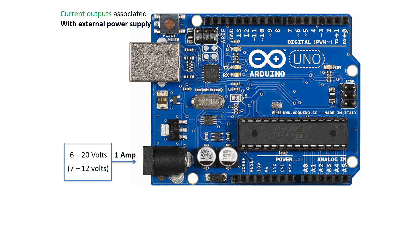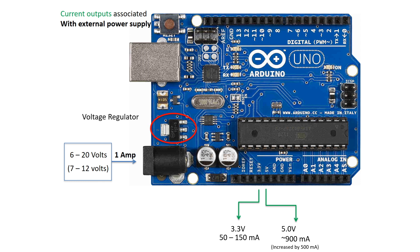With respect to the barrel jack input, we can provide up to 1 amp of current to the board. In this case, the capability of our 5 volt pin increases from 400 to 900 milliamps, whereas the 3.3 volt pin still can only supply a maximum of 150 milliamps. It's okay to provide a higher voltage through the barrel jack because of the onboard voltage regulator. However, providing more than 7 volts will cause the regulator to work harder and get hot, producing thermal limiting, which causes the maximum available current through the 5 volt pin to drop. That 900 milliamps is specific to a 7 volt supply — pushing 9 volts drops current to about half, and 12 volts drops it to about a quarter.